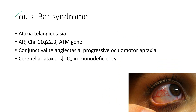Next is Louis-Bar syndrome, also known as ataxia telangiectasia. It is an autosomal recessive condition. The patient presents with conjunctival telangiectasia and progressive oculomotor apraxia. Other features include cerebellar ataxia, reduced IQ, and immunodeficiency. This picture shows conjunctival telangiectasia in a case of Louis-Bar syndrome.